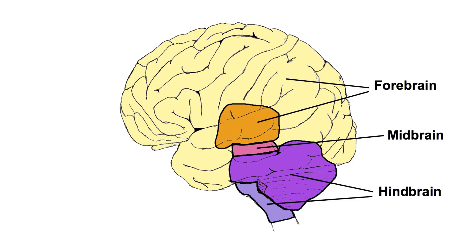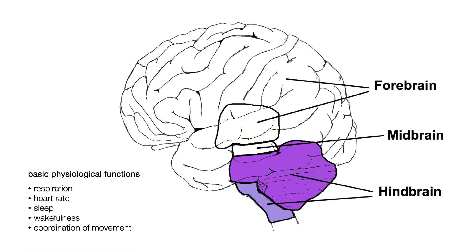Let's first look at the three most major subdivisions of the brain: the forebrain, the midbrain, and the hindbrain. The hindbrain consists of two purplish regions — the lowest, most bluish region is the lower portion of the brainstem, and just above that is the cerebellum. The hindbrain is the oldest, most primitive region of the brain. It connects the brain with the rest of the body and maintains basic physiological functions necessary for survival, such as respiration, heart rate, sleep, wakefulness, and coordination of movement.